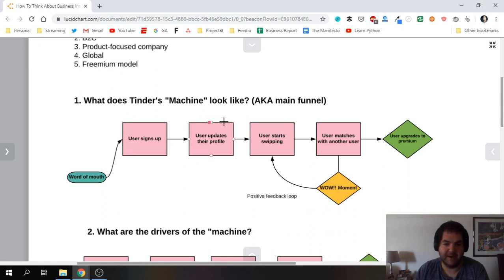A user then will update their profile and kind of set up their account. The user will start swiping, hopefully the user will match with someone - that very much is the wow moment that's going to create then a loop because it's very much a positive feedback loop, almost to the point where you can get addicted to it, and you're going to continue to use Tinder since you're getting that positive reinforcement.